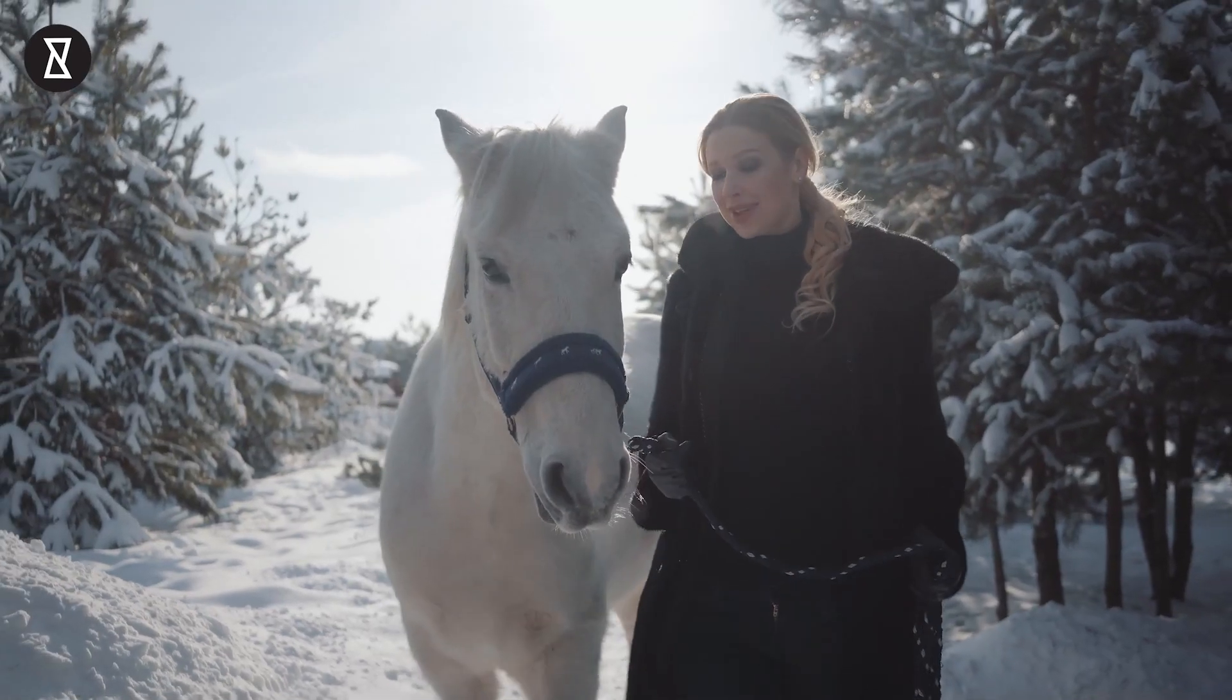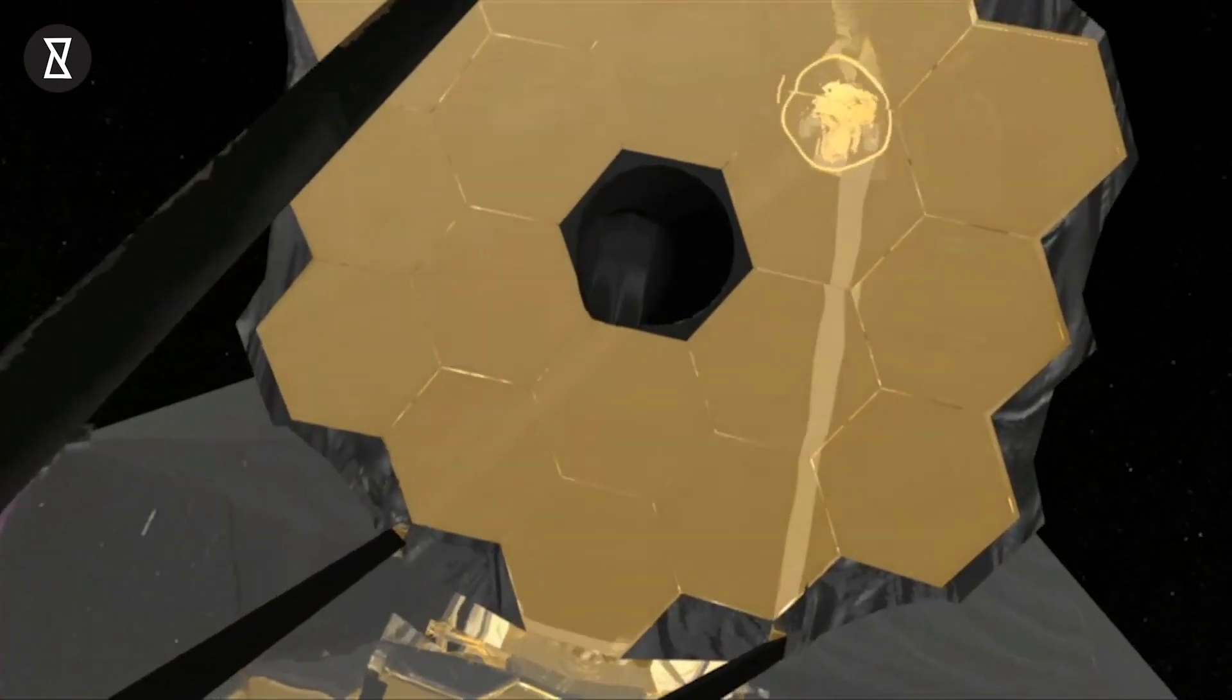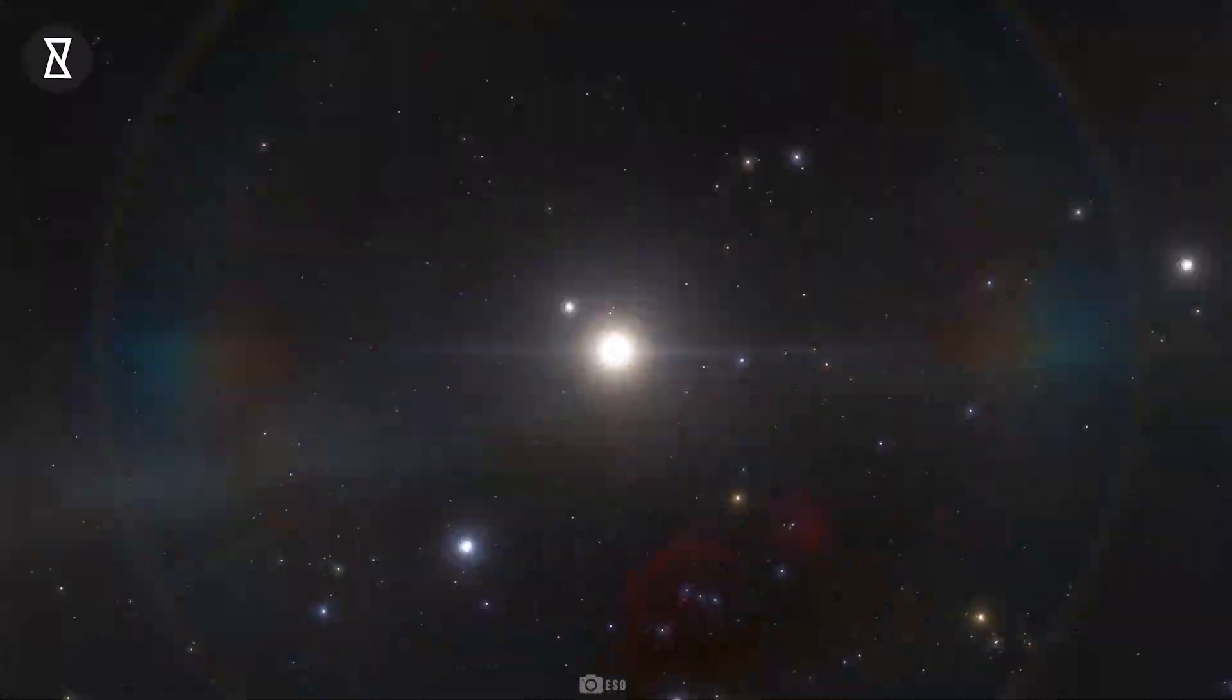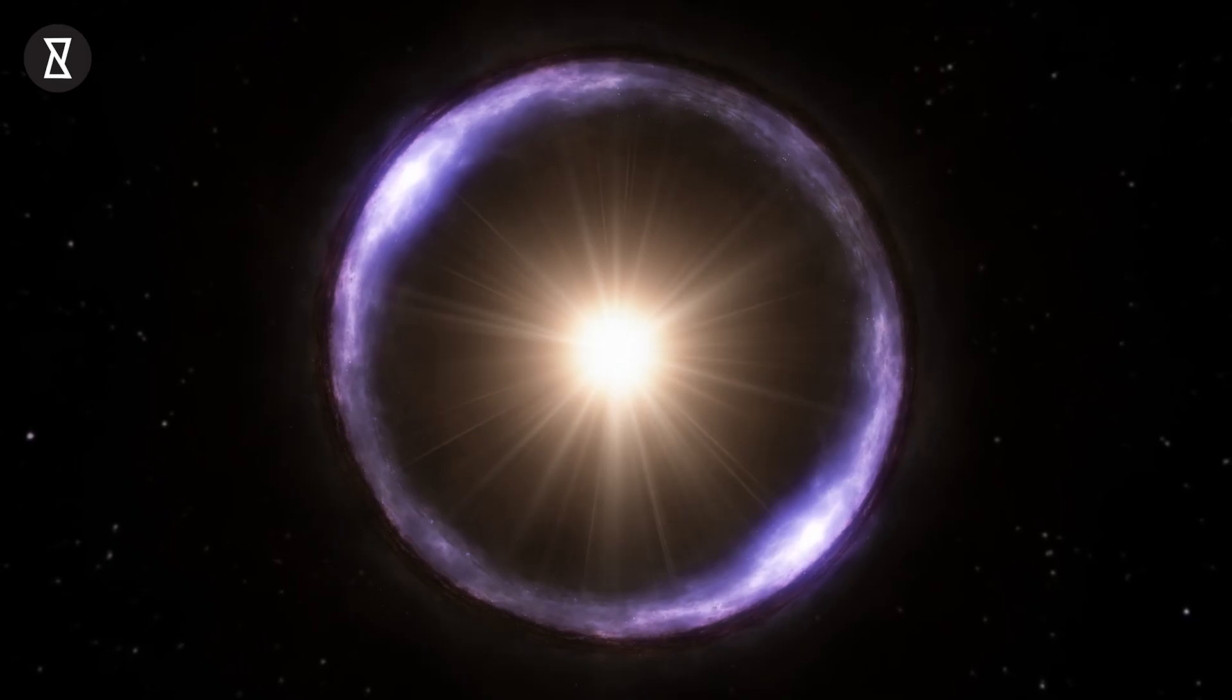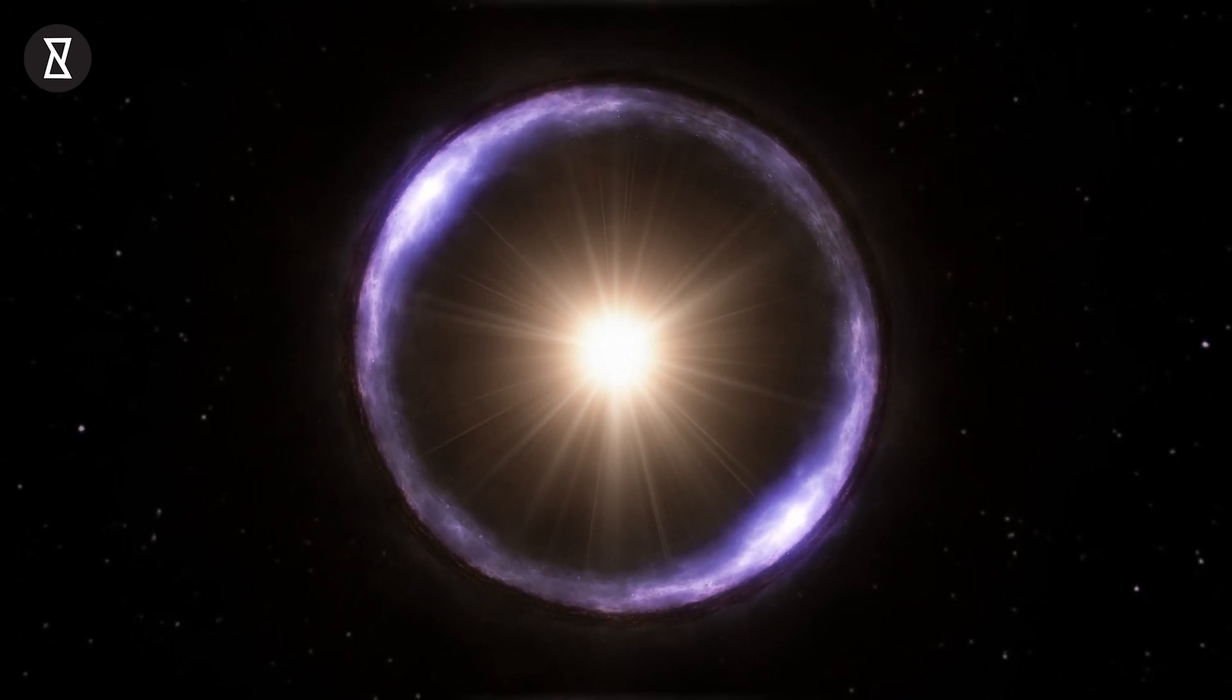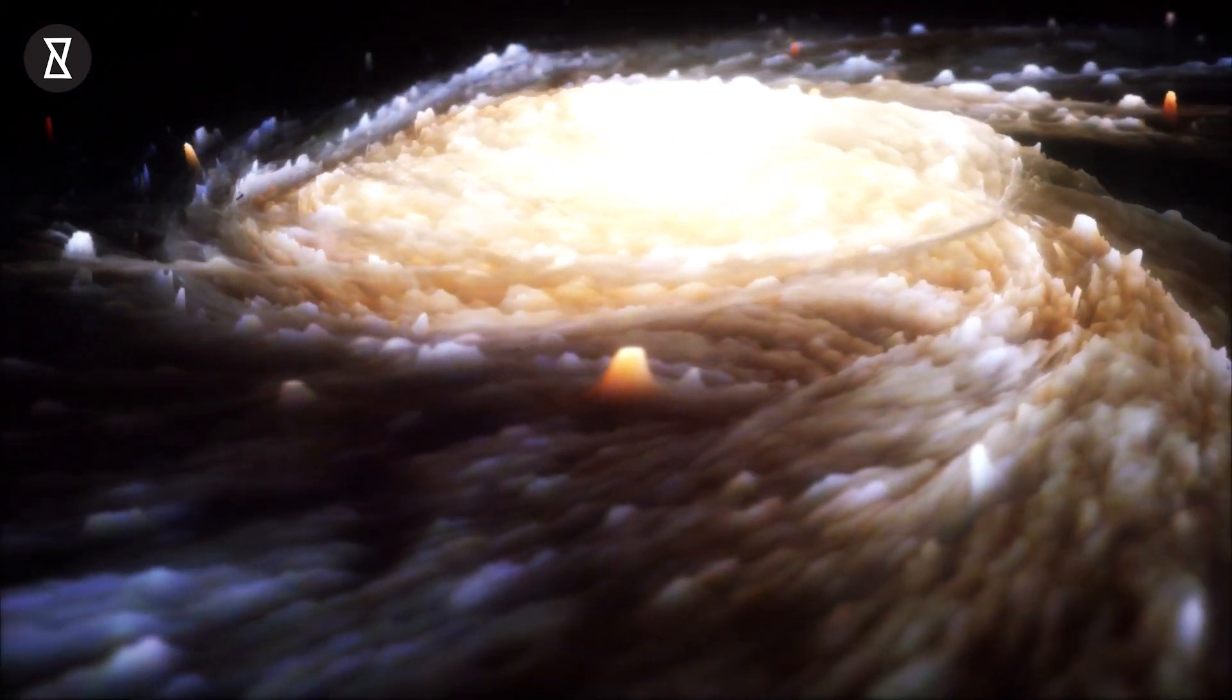But hold on to your horses, because we aren't done yet. That's right. Webb has also snapped something beautiful. It has captured an almost perfect Einstein ring, whose light has traveled roughly 12 billion light years to reach us. And we can't stop staring. An Einstein ring occurs when a distant galaxy has been magnified and wrapped into an almost perfect ring by a massive galaxy in front of it. Scientists tell us that we wouldn't be able to see this galaxy at all if it wasn't for the Einstein ring.